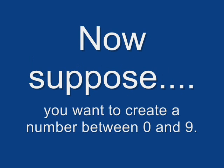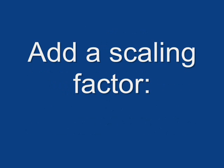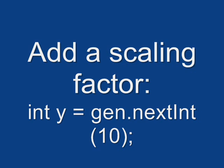Now suppose you didn't want to get one of those large random numbers. You wanted to limit it between a single digit number, between 0 and 9. To do this, you would add a scaling factor. So I'm going to have you create a new line of code, this time int y equals gen.nextint and inside the parentheses place the number 10. This will ensure that you only get a random number between 0 and 9.